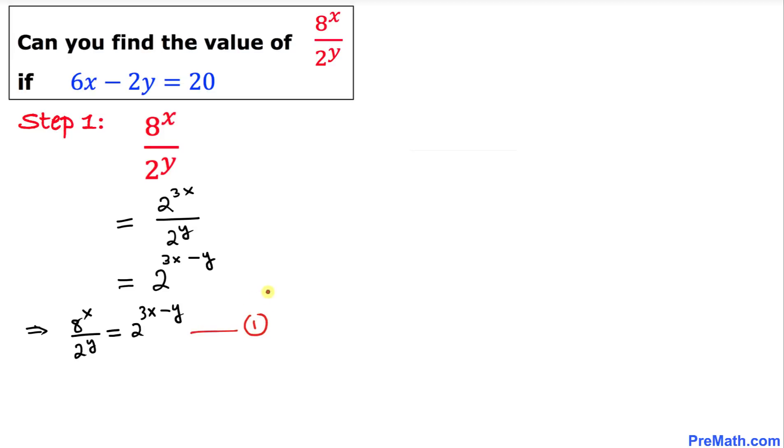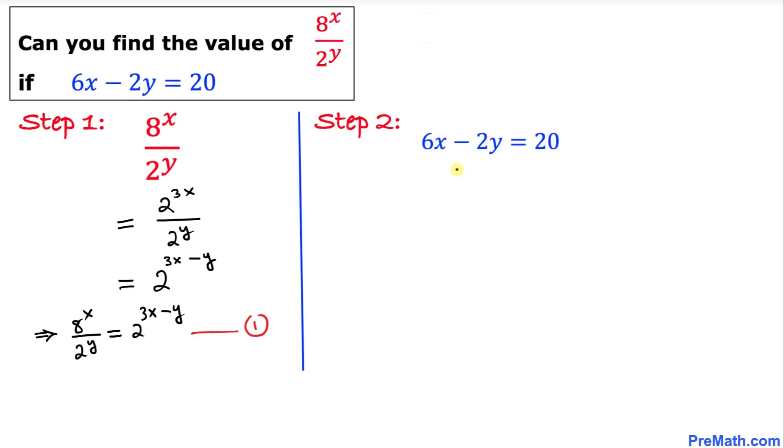Here is our next step. I've copied down the given equation 6x minus 2y equals 20. We can see that this equation is divisible by 2 across the board, so I can divide it by 2.